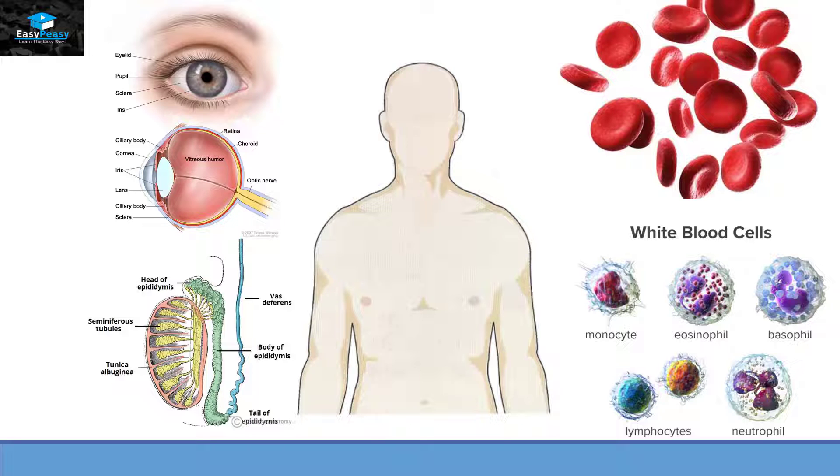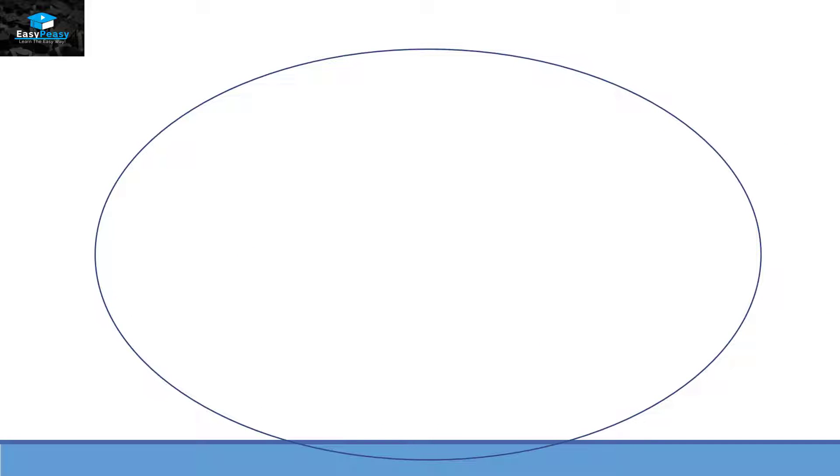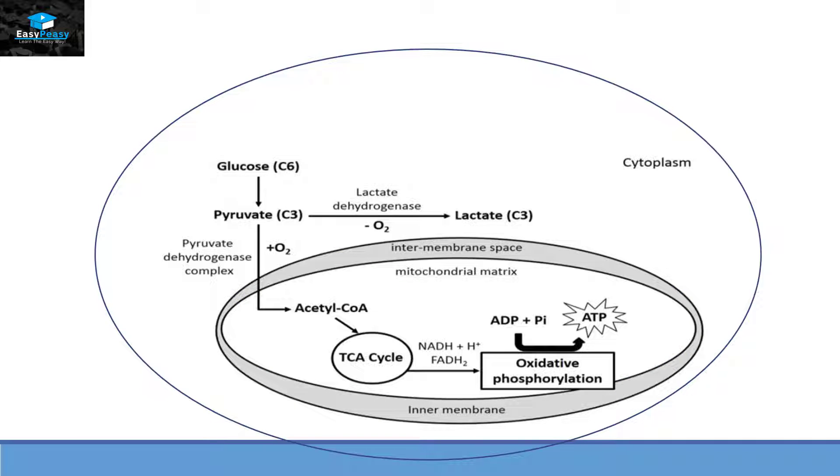Now let's see what is happening inside a cell. In normal conditions, glucose, a six-carbon compound, will convert itself into a three-carbon compound called pyruvate. Pyruvate will enter inside the mitochondria if oxygen is available and convert itself into acetyl-CoA with the help of an enzyme called pyruvate dehydrogenase complex.